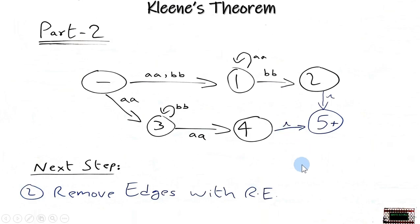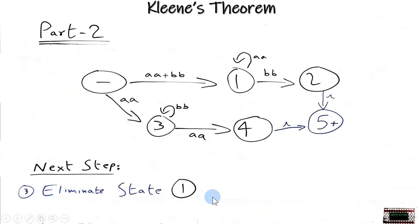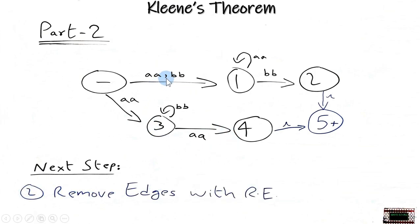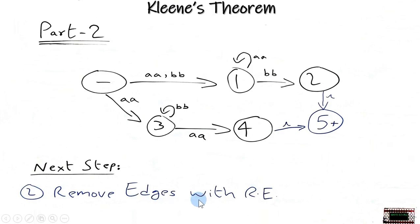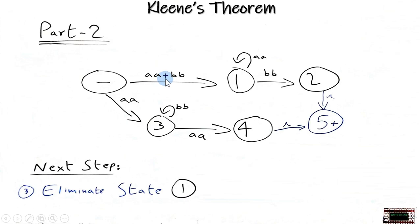Now the second step is to remove edges with RE. In this step we have changed the comma into plus. You can see it was previously a comma and we have changed it to a plus. In RE there are not any commas but plus, and plus defines the OR. It means that either AA will go on or BB will go further.